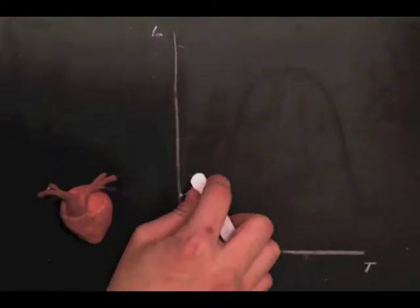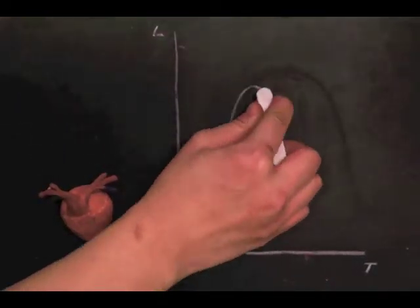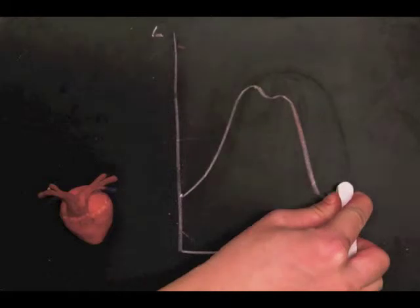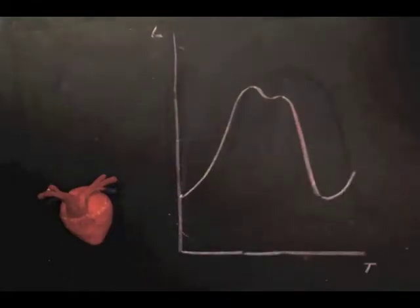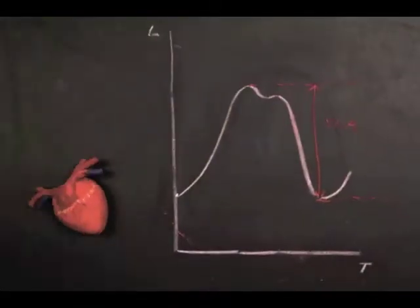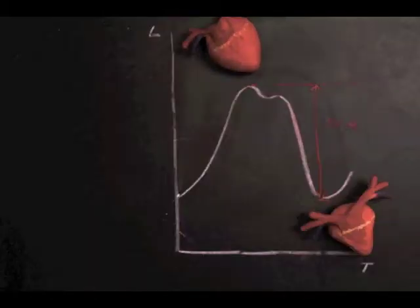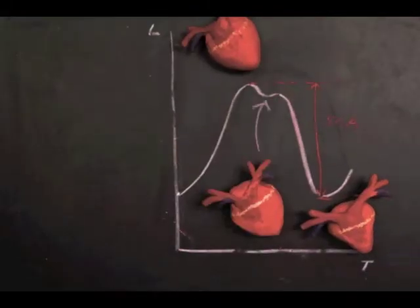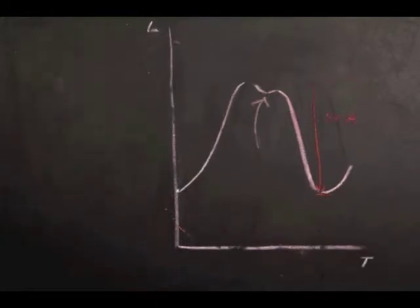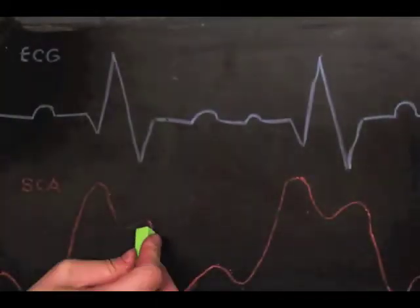The second recording we used was the SCA or systolic contraction amplitude. At the peak of the SCA, the heart is mostly relaxed. The lowest point of the SCA is a recording of ventricular contraction. If a dip is recorded in between, this is most likely atrial contraction.